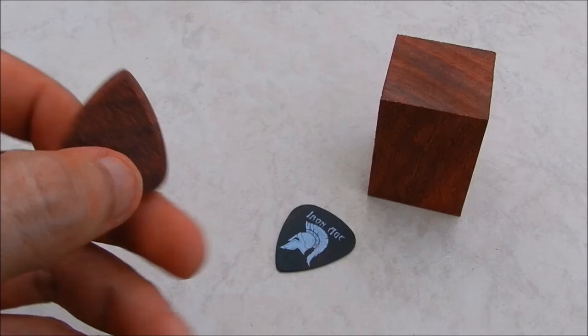So there you have it, how to make a wooden guitar pick from a turning block. Thanks for watching and if you have any questions, feel free to comment below or visit the link in the description to learn more.